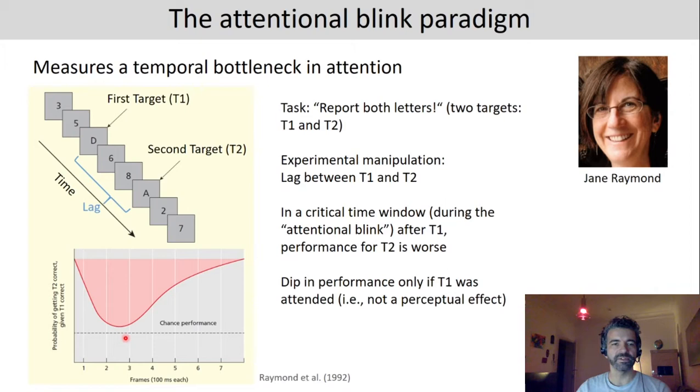Importantly this dip in performance is only observed if T1 is actually attended. So only if participants report the correct T1, in this case D, you see this dip in performance. And here the reasoning would be that if you do not attend T1 then obviously T1 doesn't need any resources and all of the resources are available to already process T2 at an earlier point in time.